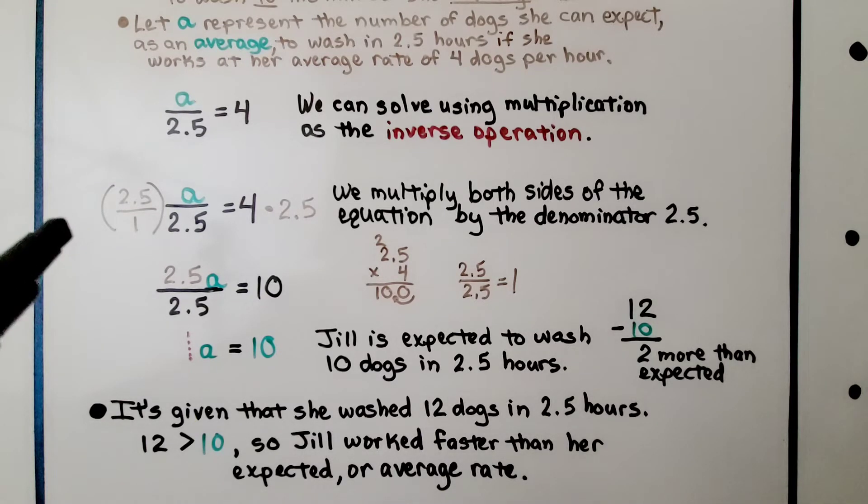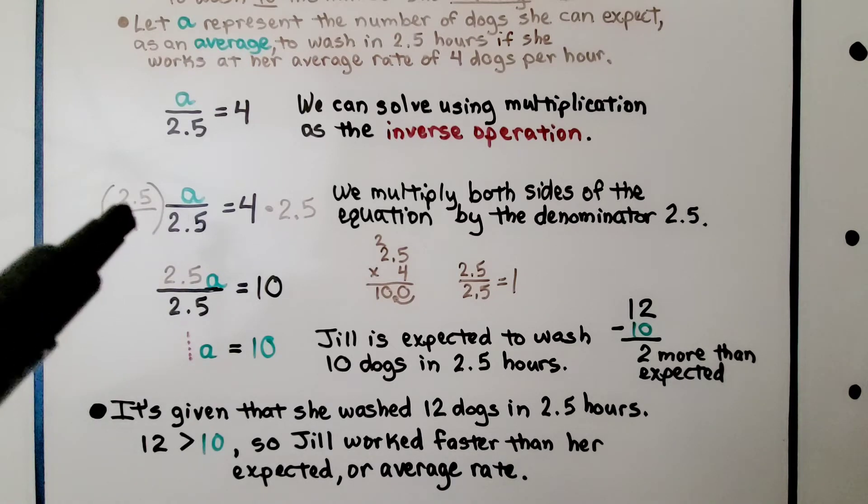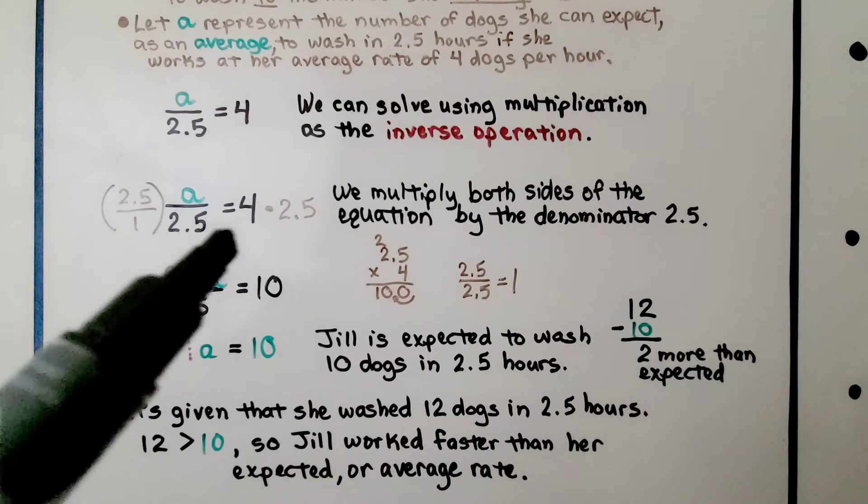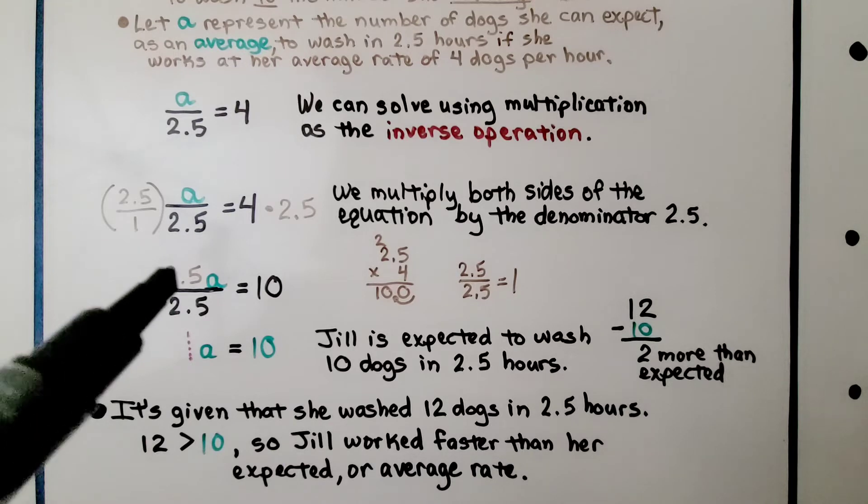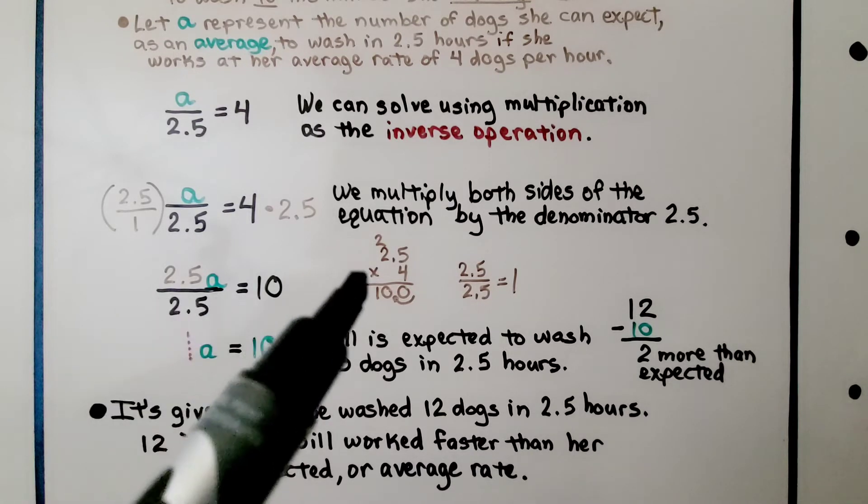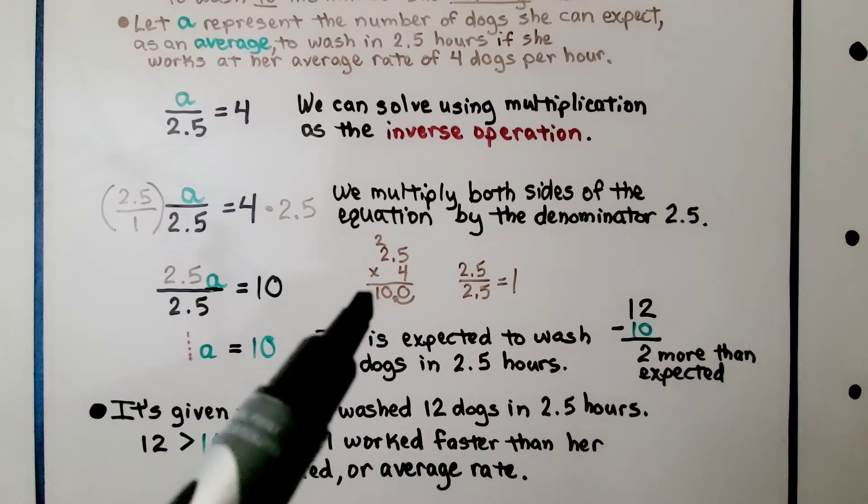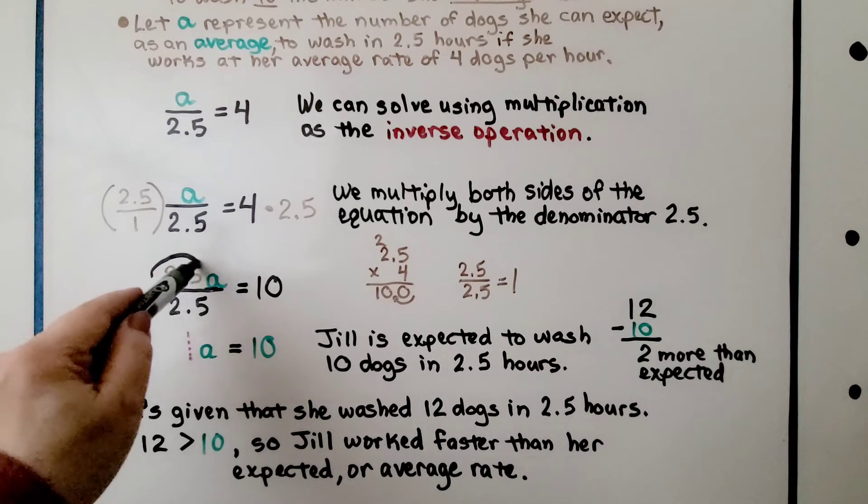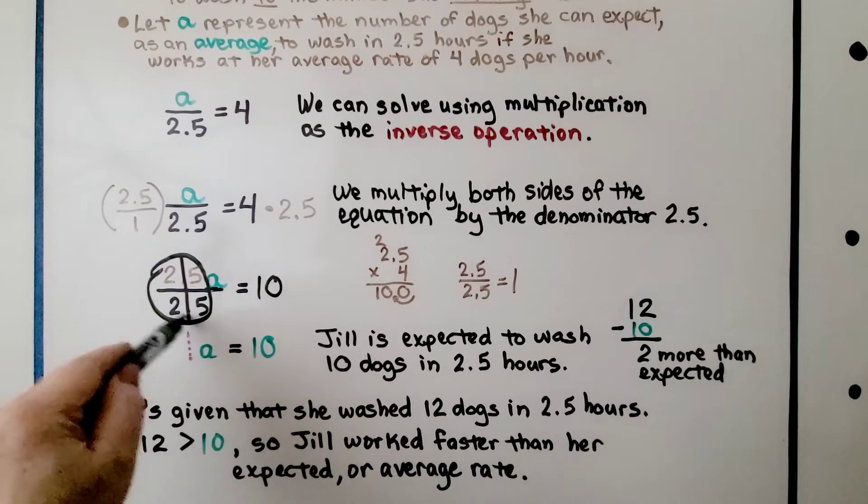We multiply both sides of the equation by the denominator 2.5. We can write this over 1 to multiply straight across. We get 2.5A over 2.5. On the other side, 4 times 2.5 is 10. Since we have 2.5 over 2.5, the same numerator and denominator, this cancels out to 1.